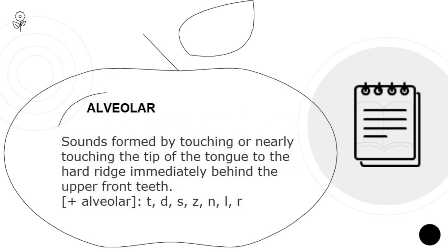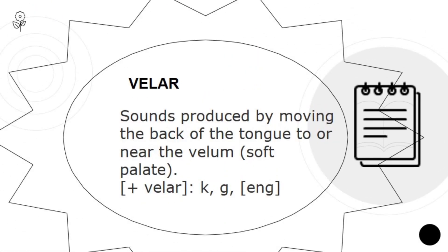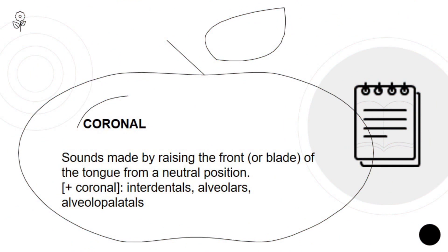Alveolar: sounds are formed by touching or nearly touching the tip of the tongue to the hard ridge immediately behind the upper front teeth — examples are t, d, s, z, n, l, r. Palatal: sounds produced by moving the front part of the tongue to or near the hard palate at the roof of the mouth. Velar: sounds produced by moving the back of the tongue to or near the velum or soft palate. Coronal: sounds made by raising the front or blade of the tongue from a neutral position — examples are interdentals, alveolars, and alveopalatals.